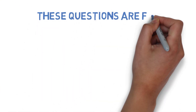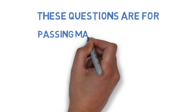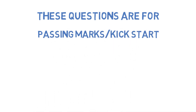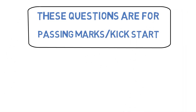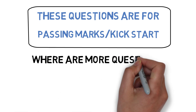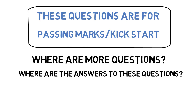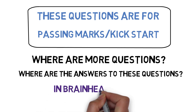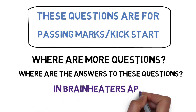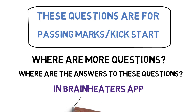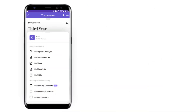These are the most important 16 questions you need to do for this subject. Once you do these questions you will have basic preparation and these questions are very important for passing. If you are wondering where to get more questions, we have uploaded all the questions in the Brain Eaters plans. You will get three plans depending on your aim — passing marks, average marks, or scoring marks.